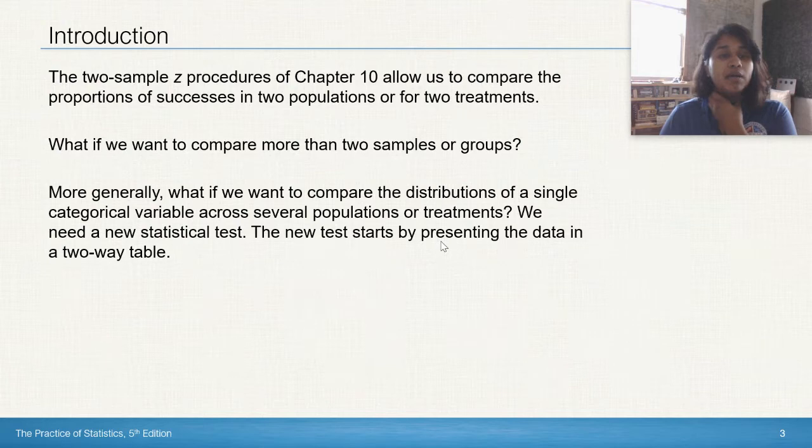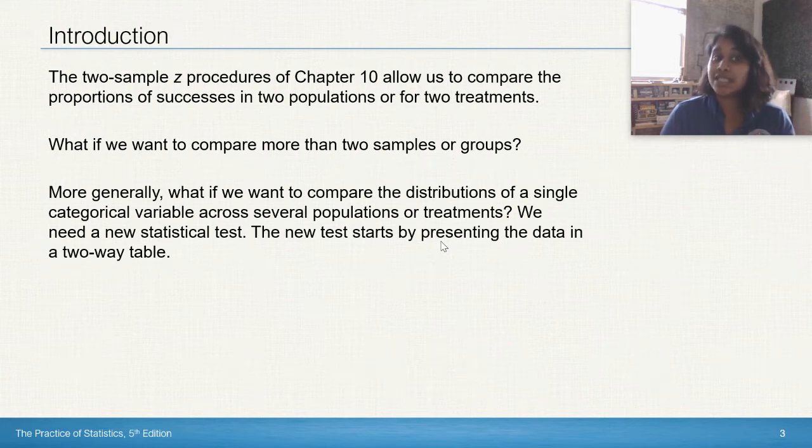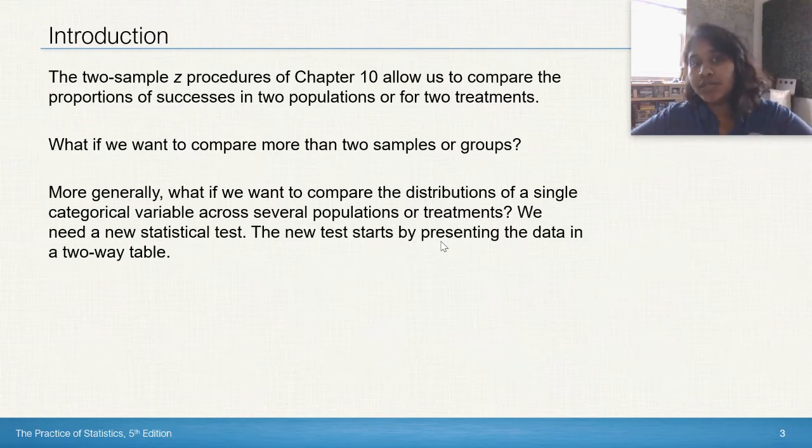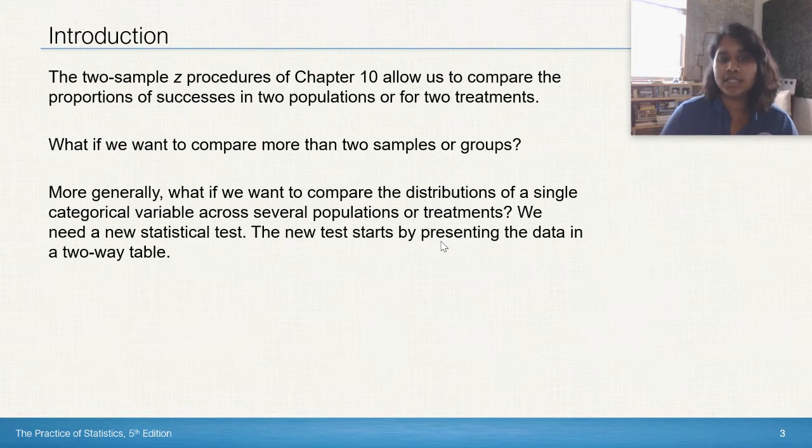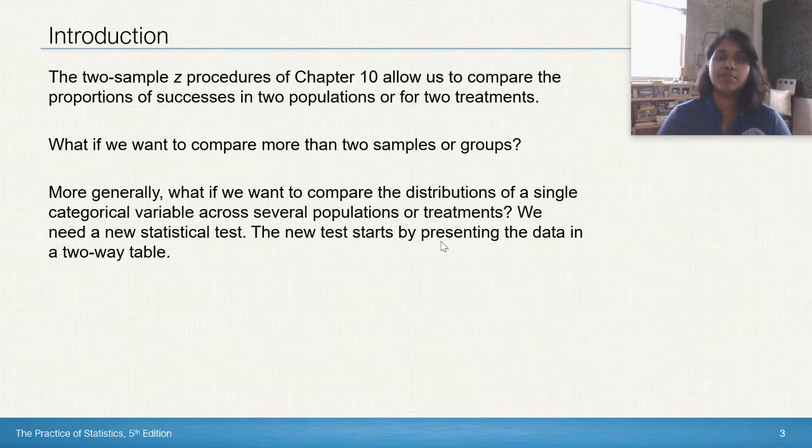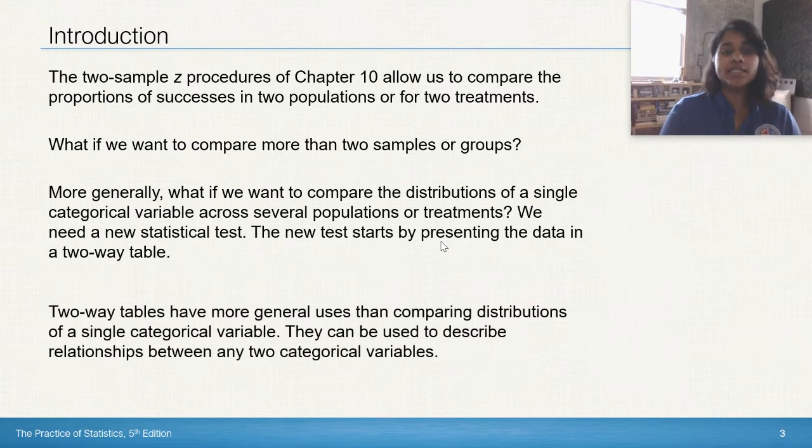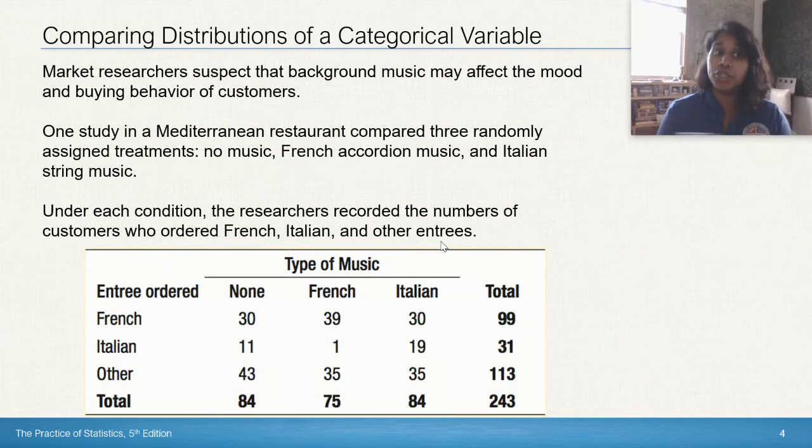In the previous chapters we talked about two different samples. Specifically in chapter 10 we talked about two sample Z procedures. So that's what happens when you want to compare proportions of success in two populations or two treatments. What happens when you want to compare two or more? Also what happens if you want to compare the distributions of a single categorical variable across several populations or treatments? So we need a new test, instead of doing two-way Z tables, we get to use our chi-square test.